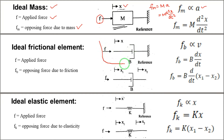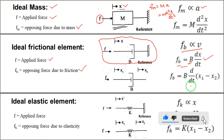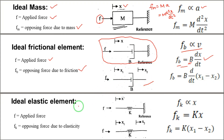Now coming to the frictional element. The frictional element is connected to the reference. The opposing force F_B due to friction: F_B is directly proportional to velocity V, where V equals dx/dt. So F_B equals frictional constant B multiplied by dx/dt. If the frictional element is between two displacements x1 and x2, then F_B equals B · d(x1 − x2)/dt.